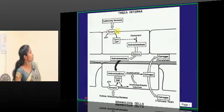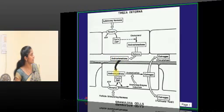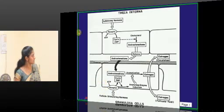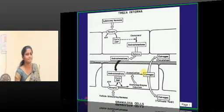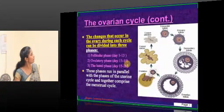This is the two-cell two-gonadotrophin theory. LH converts cholesterol into androstenedione in the theca cells. Androstenedione is the dormant hormone, which moves to the granulosa cell. FSH then takes this androstenedione and converts it via the enzyme aromatase into estrogen.